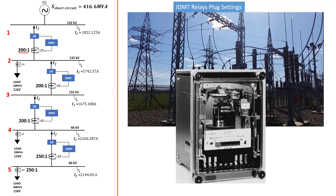As you can see, this current transformer here has a ratio of 201, this one also has a ratio of 201, and the last one also has a ratio of 201 — that is based on the fault current available on the bus bar. The IDMT relay right here needs to send a signal to the circuit breaker to trip, and the IDMT relay itself receives a signal based on what the current transformer is seeing from the current that is flowing.